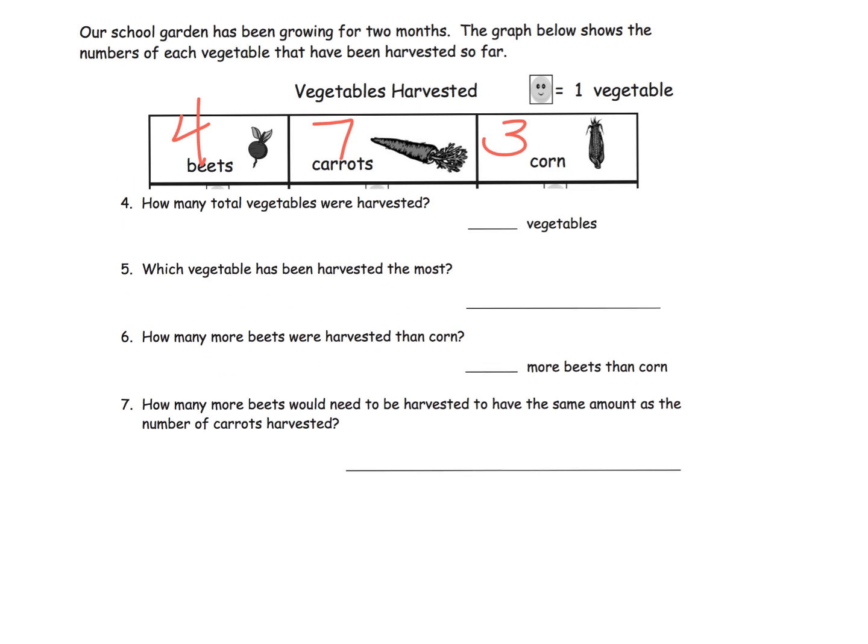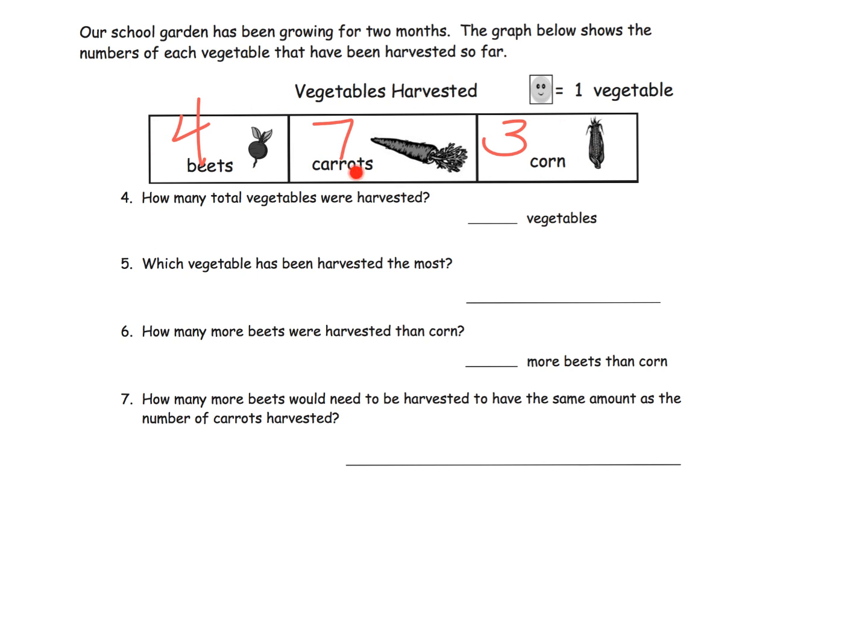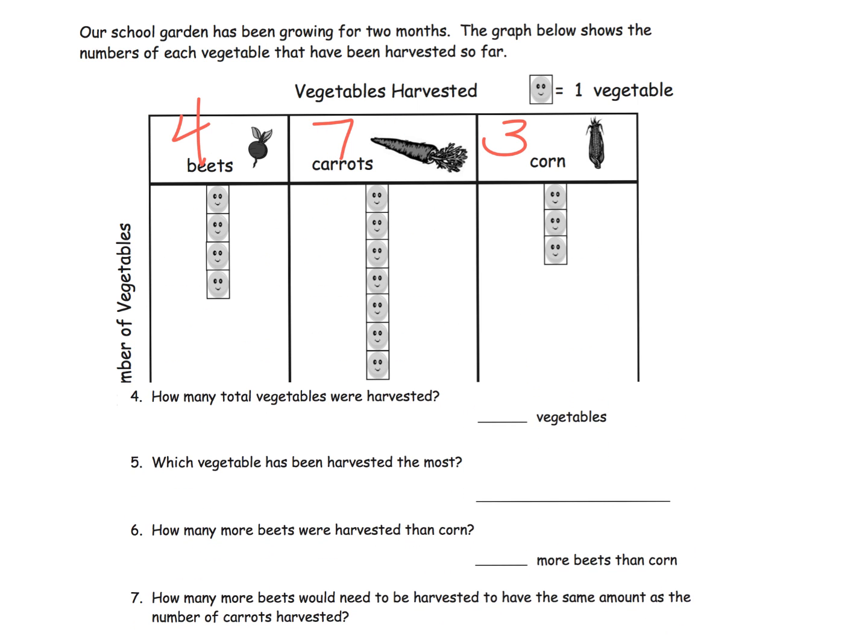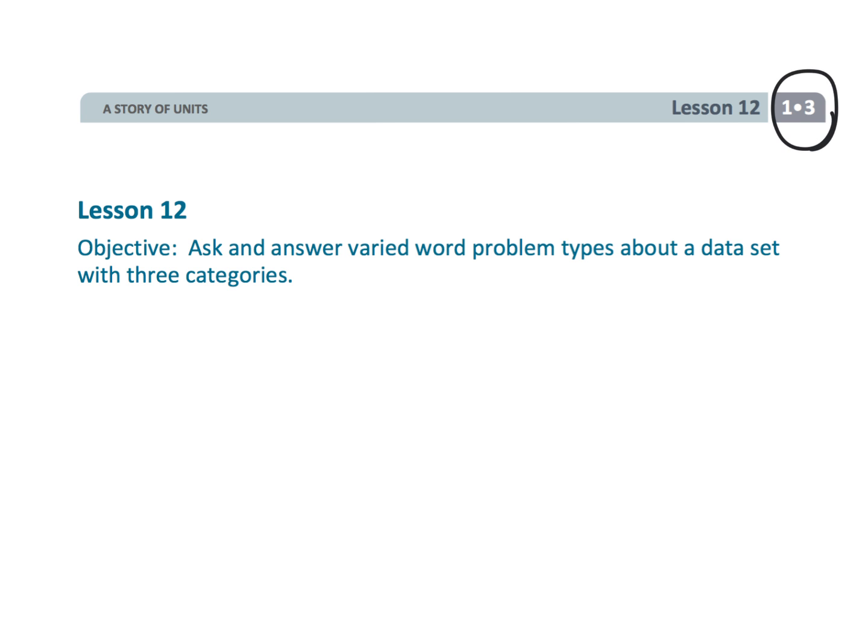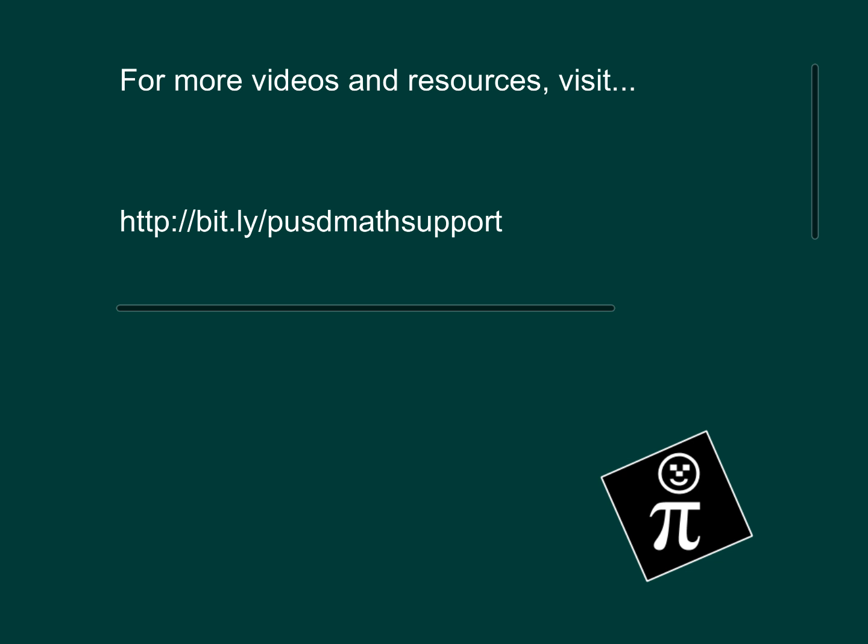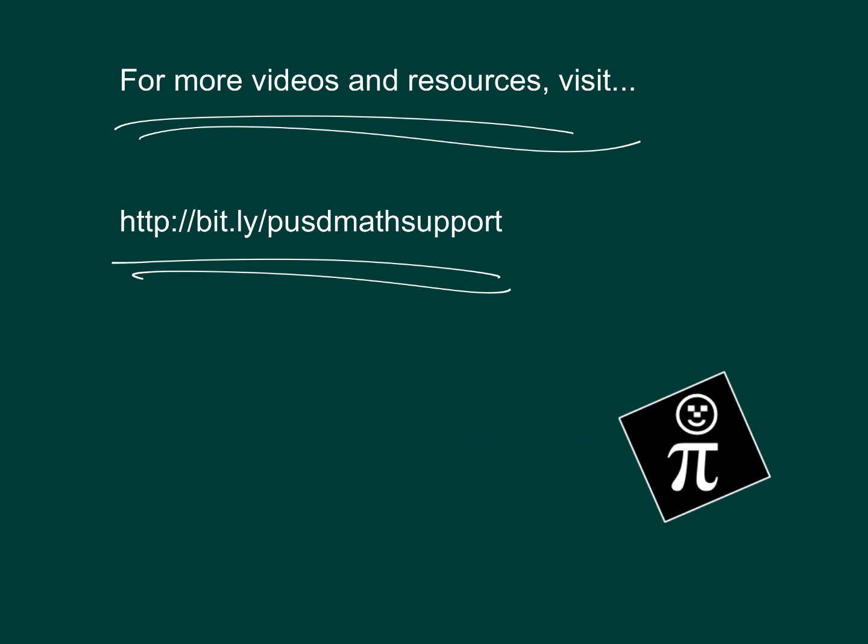The important thing is, parents and teachers, as you'll notice I wrote the numbers. We don't necessarily need students to answer these questions based on the numbers. Ideally, we want them to be answering based on what they see in the graph. Although they can certainly use the numbers if they want. So how many total vegetables were harvested? We can count and add them up. Which vegetable has been harvested the most? Clearly carrots. The idea is to use these bars to answer the questions, but students are welcome to use the numbers as well. That wraps up first grade module three lesson 12, answering questions based on a collected data set.